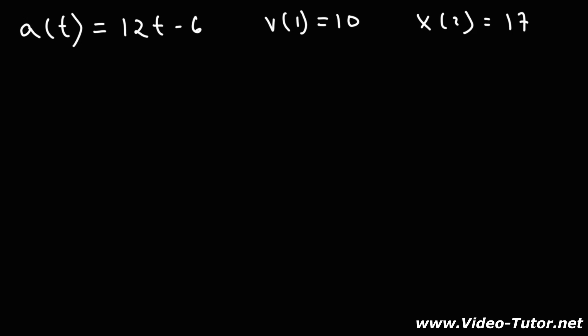In this problem, we're given the acceleration function, and using these two points, we want to determine the velocity function and the position function. How can we do this?